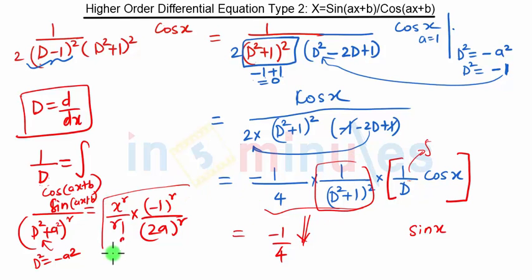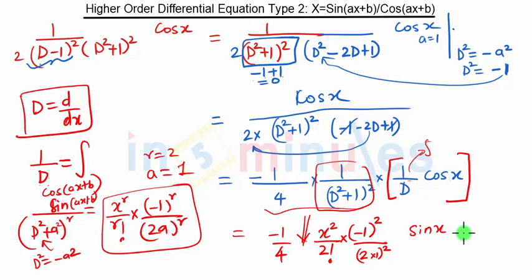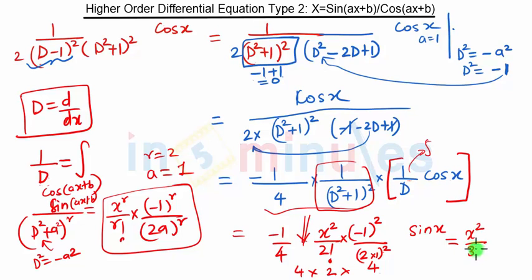For this part, we write this equation in our case: r is 2, and a is 1, since the coefficient of x in sin x or cos x is 1. So we get x² upon 2 factorial into (−1)² upon (2 × 1)². So 2² is 4 and 2 factorial is 2, giving a denominator of 4 × 2 × 2 = 16 × 2 = 32. Since (−1)² = 1, this gives x² upon 32, and we also have sin x — this is our solution for this part.